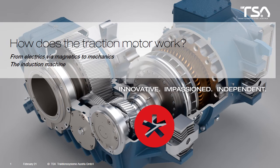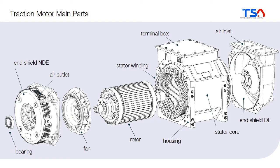Chapter 3: How does the traction motor work? In this chapter we will take the equations from chapter 2 and look at where we can find them inside the machine, to understand how the motor works. Let's have a first look at the motor itself — how does a typical traction motor look like, and of which parts does it consist?